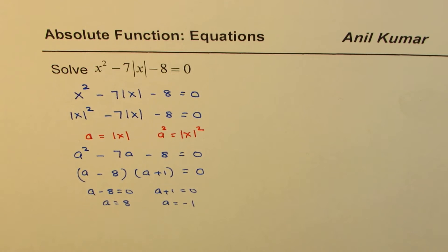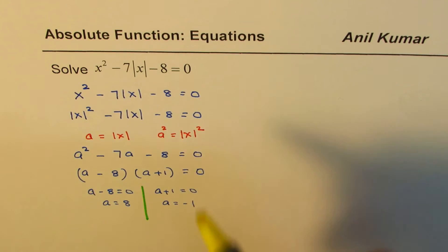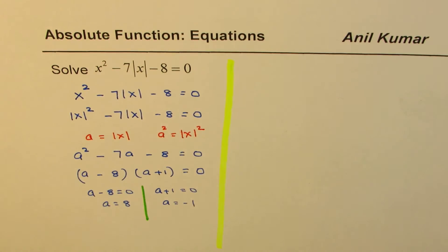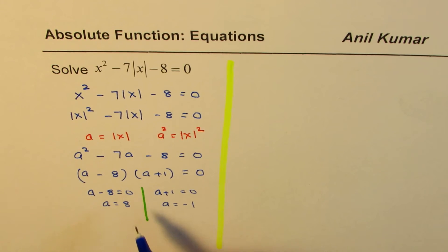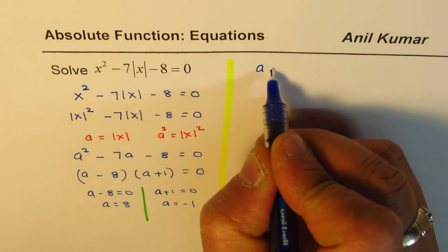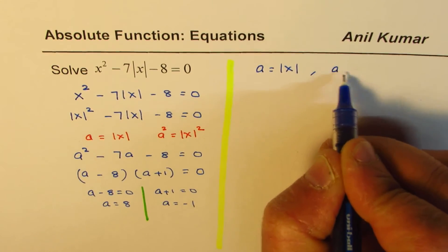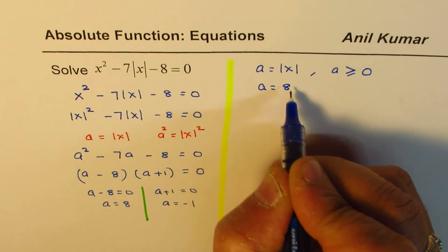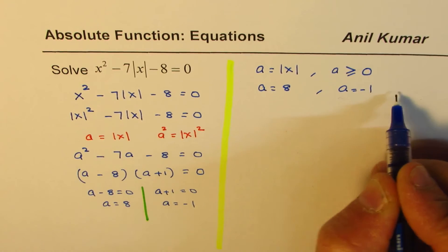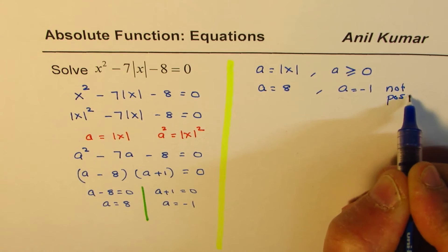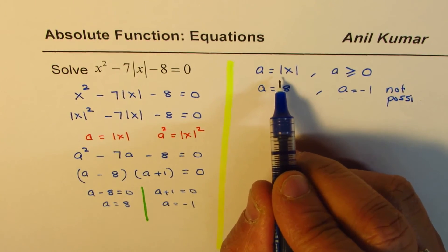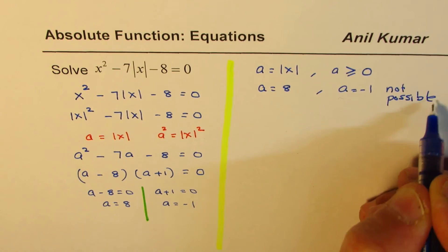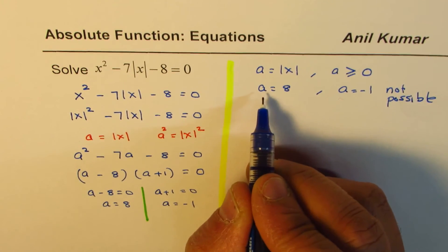So, these are possible solutions for the given condition. Let's look into these conditions — are both possible or not? We had the substitution that a equals to absolute x, which means a has to be greater than or equal to 0. The two solutions are a equals to 8 and a equals to minus 1. So, a equals to minus 1 is not possible, since a is an absolute value, it has to be greater than 0. The valid answer is only a equals to 8.